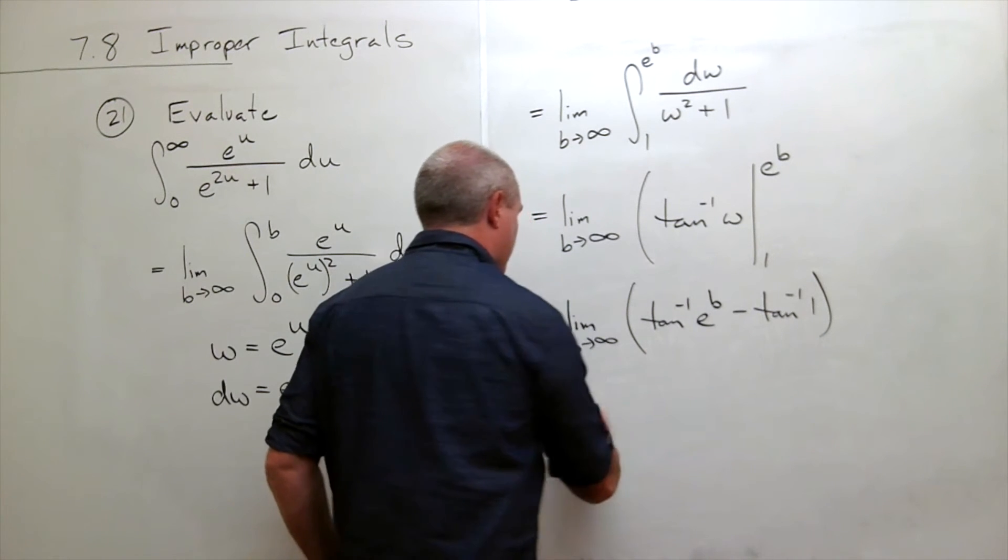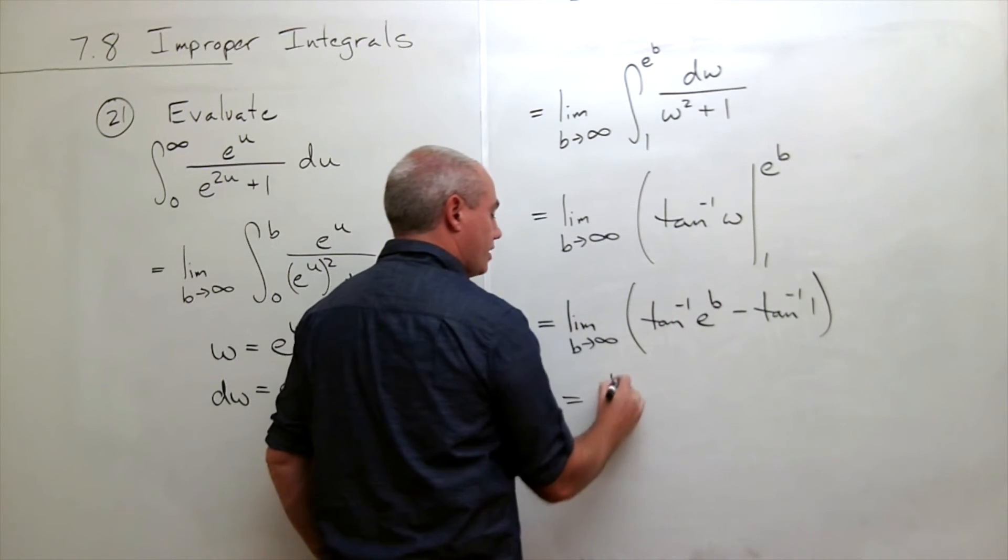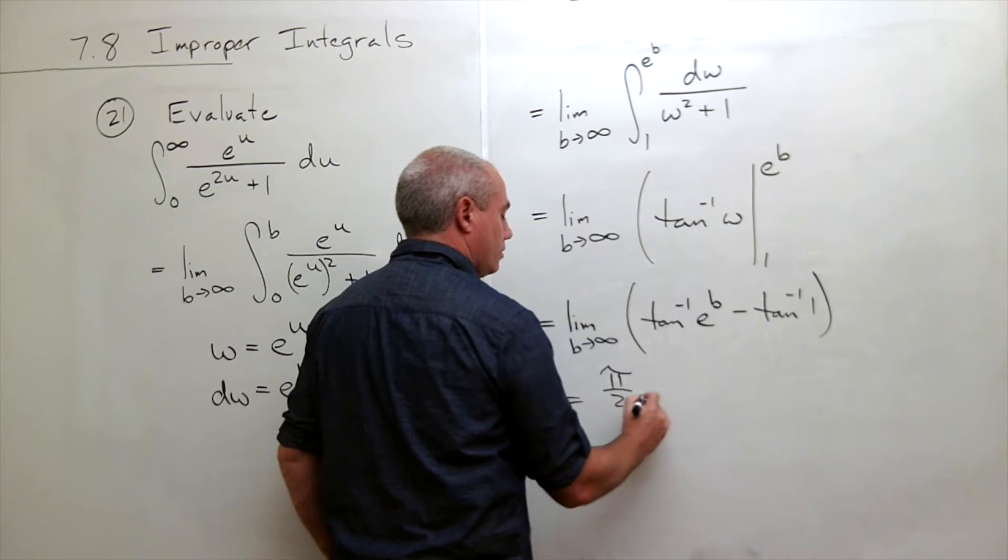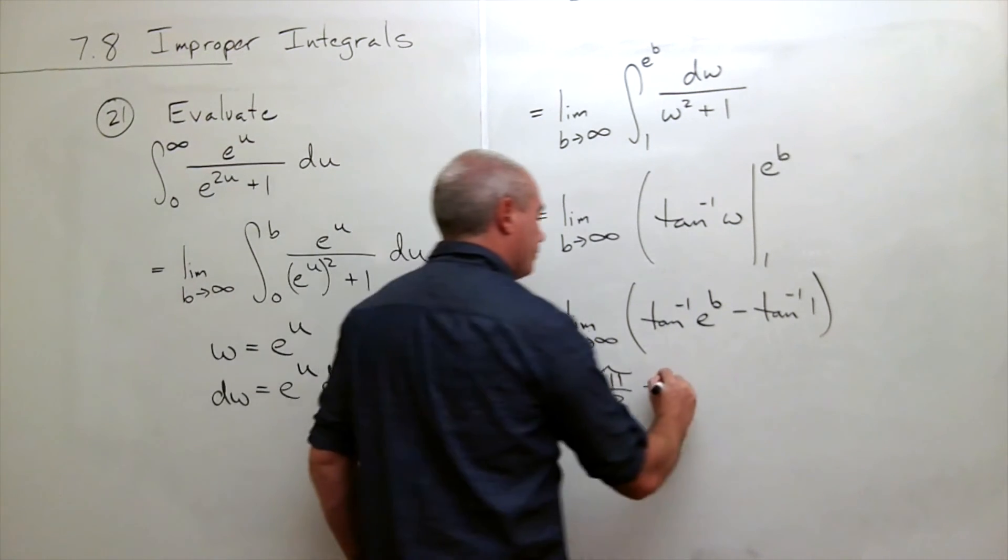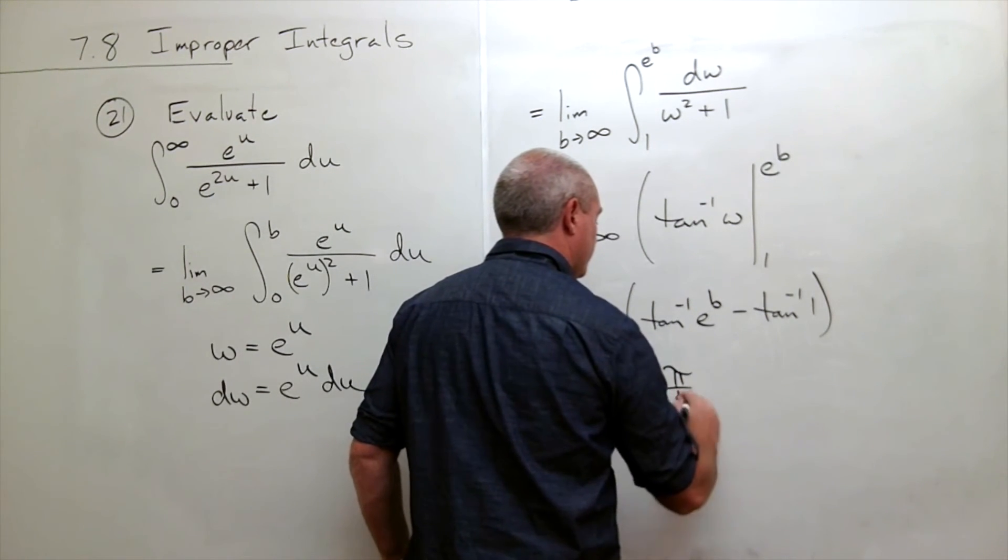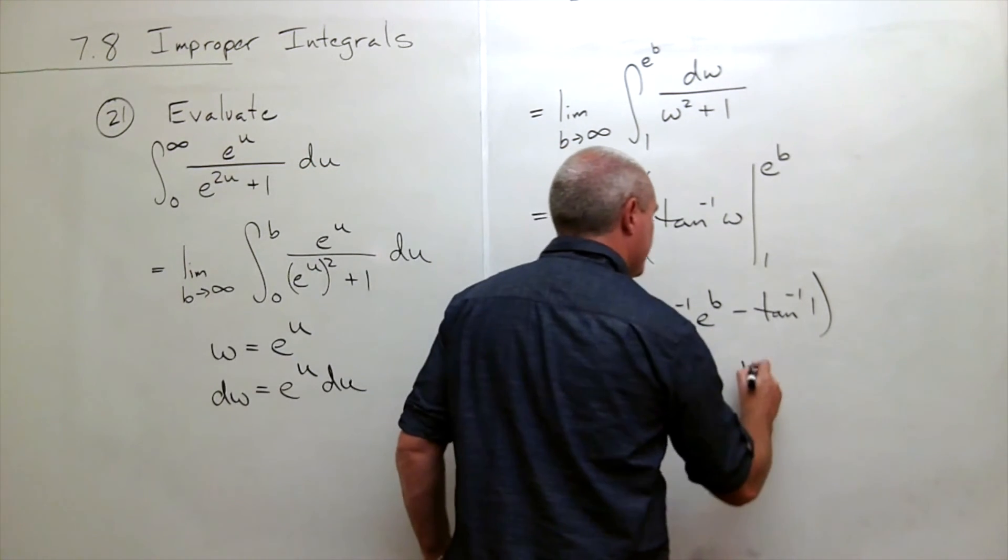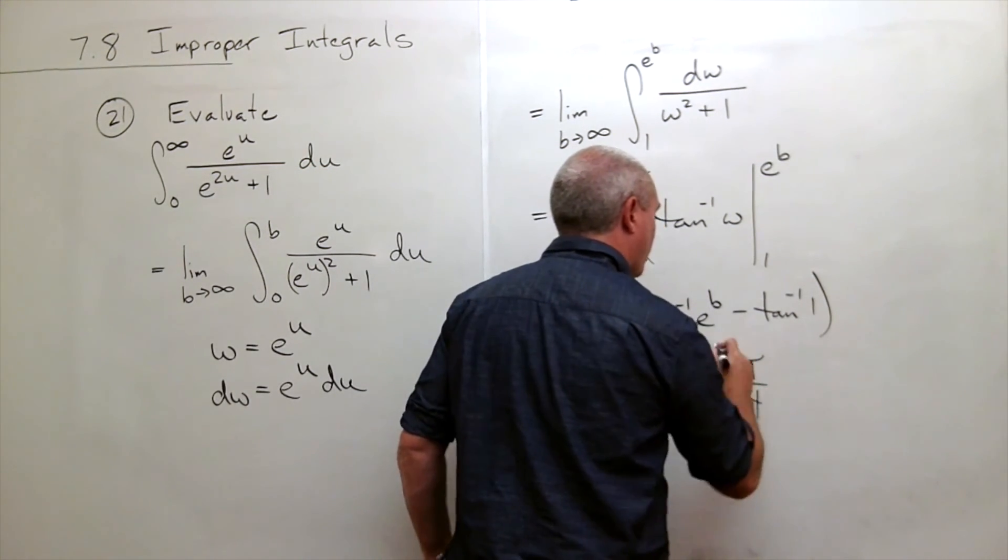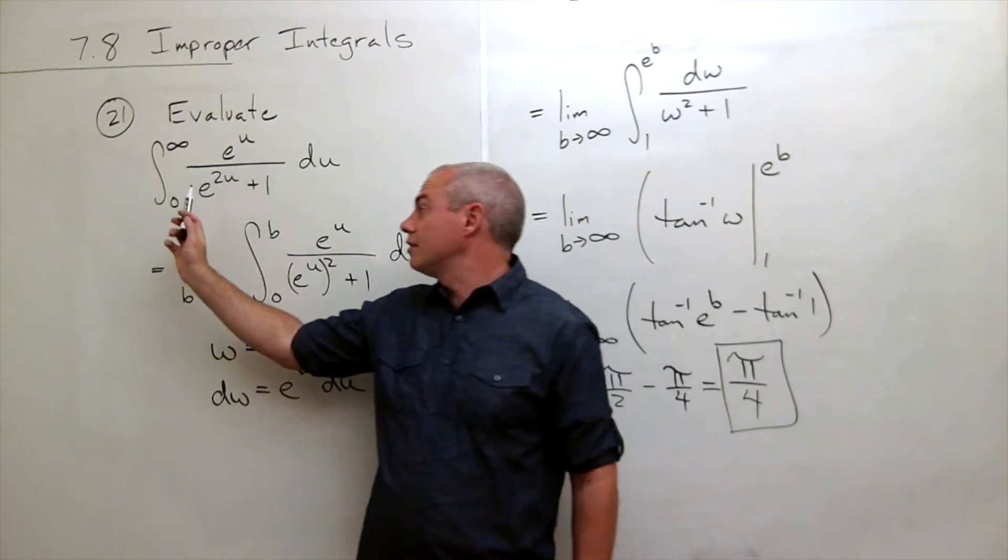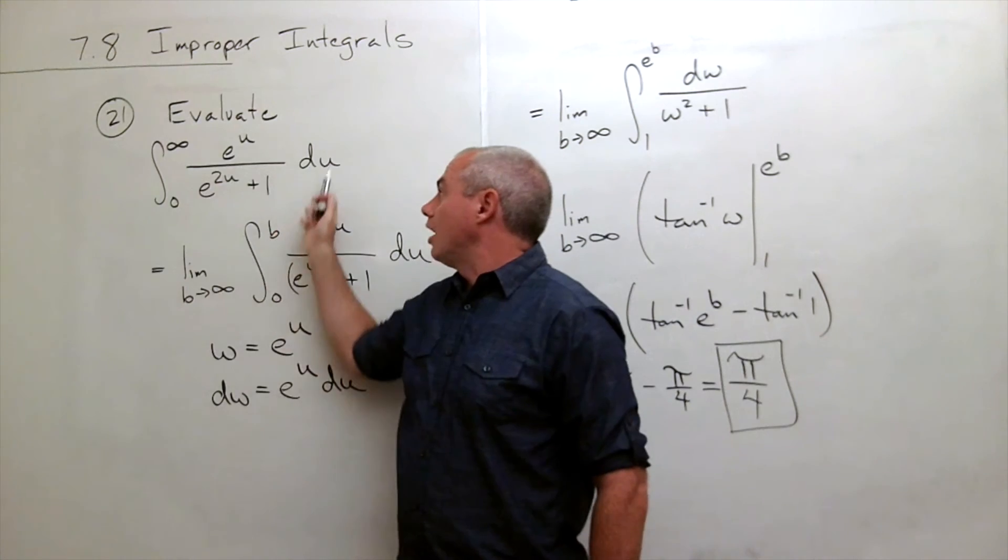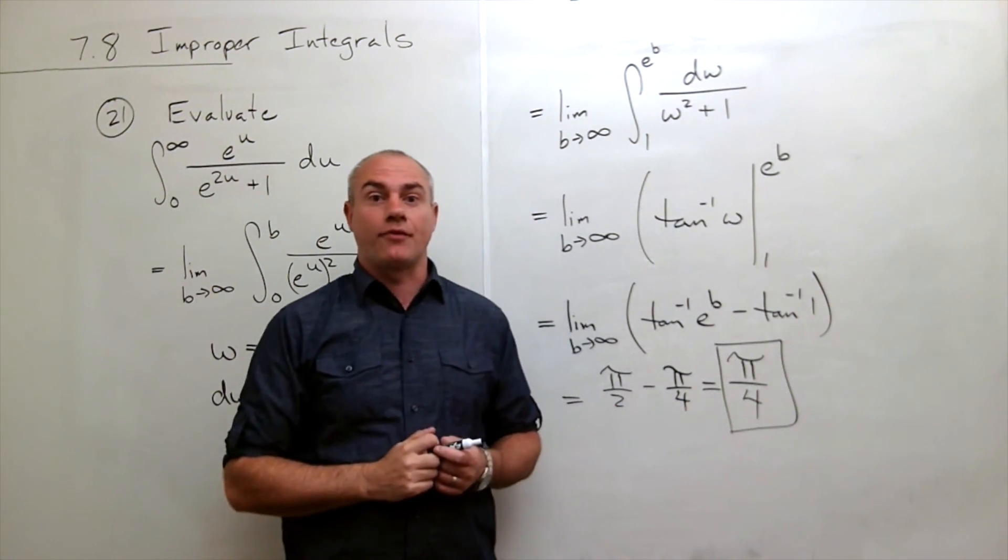So this is equal to, this whole thing as b goes to infinity becomes pi over 2 minus tan inverse of 1 which is pi over 4. And pi over 2 minus pi over 4 is pi over 4. So the value of this improper integral is exactly pi over 4.